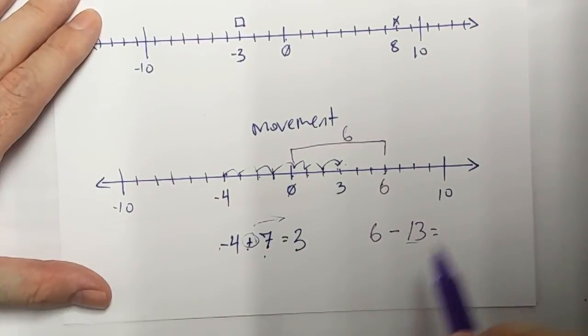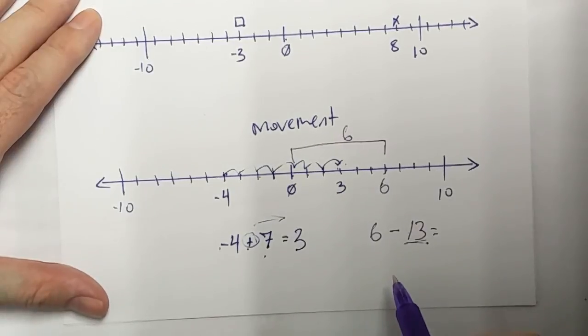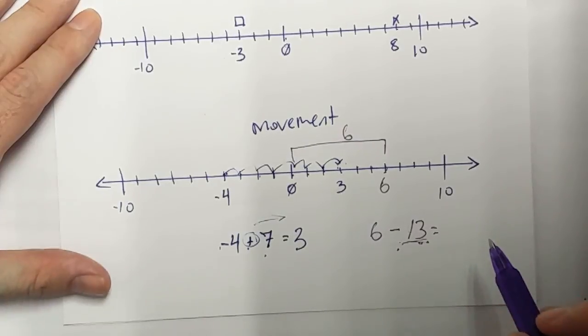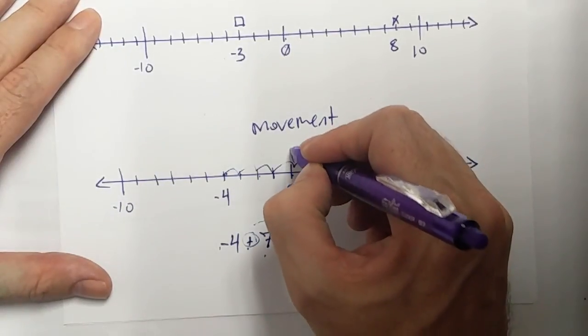I have to go a total of 16. Or sorry, 13. I've already gone 6. How many more do I need to go? Well, out of 13, take away 6. That means I need to go 7 more.